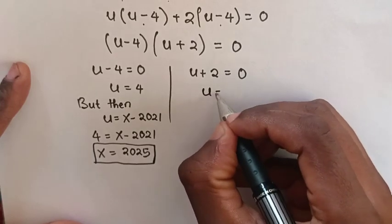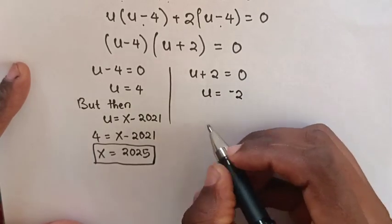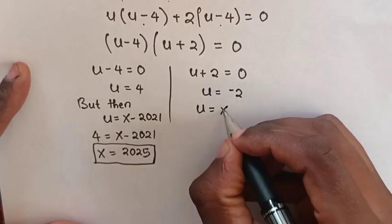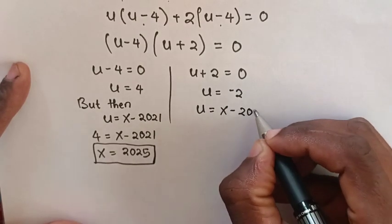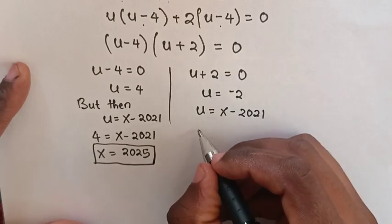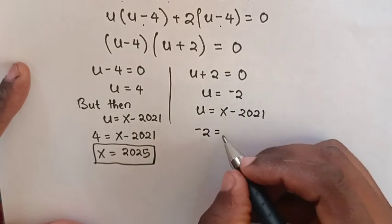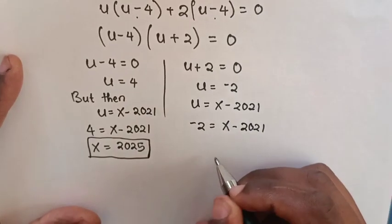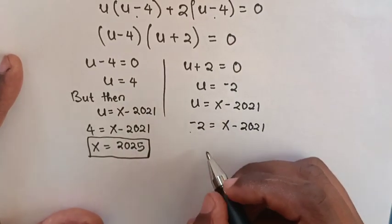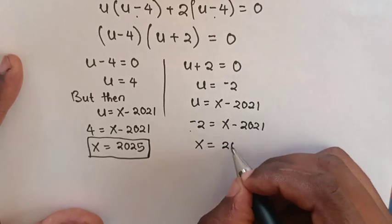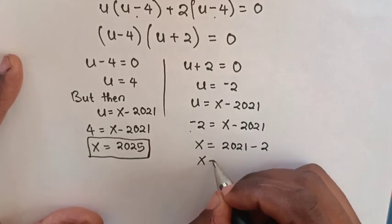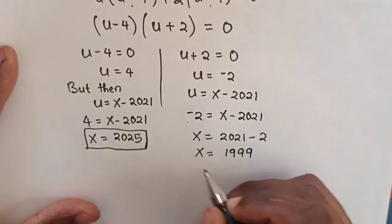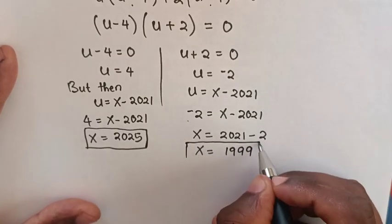In the second case, we take 2 to the right side, so u equals negative 2. But u equals x minus 2021. So we substitute the value of u, which is negative 2: negative 2 equals x minus 2021. Then we take negative 2021 to the left side, so x equals 2021 minus 2, which is 2019. So this is the other value of x.